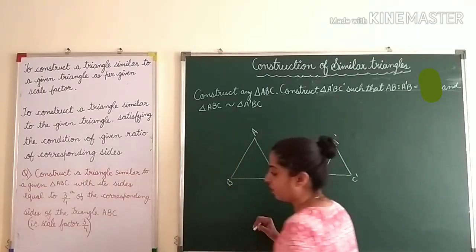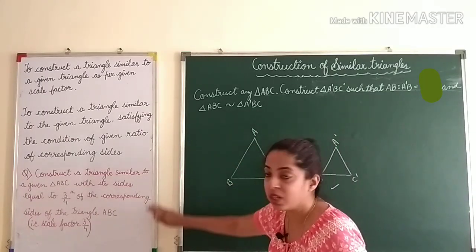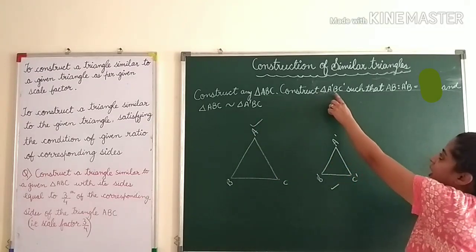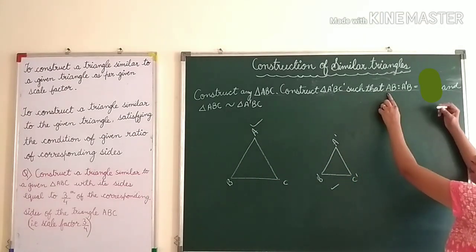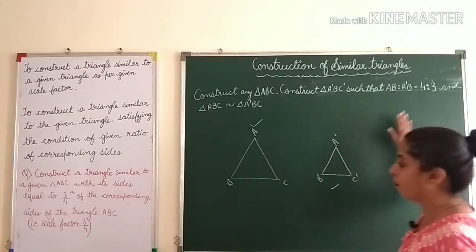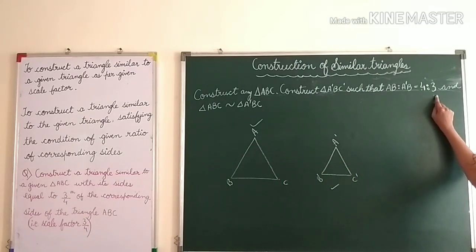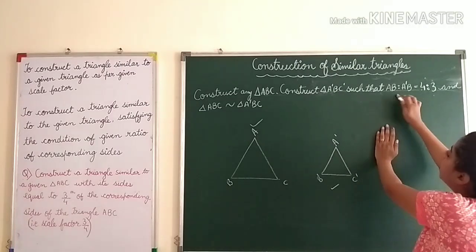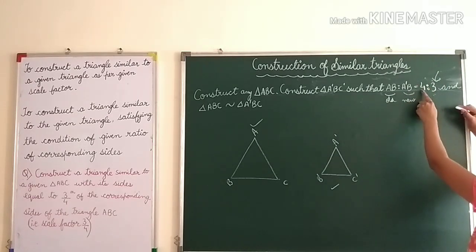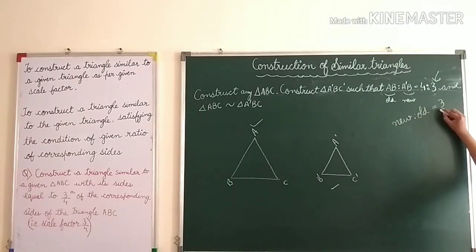Whenever a scale factor is given, compare the new triangle to the old one — new is three-fourths of the previous one. Now the question can be twisted: 'Construct triangle A'BC' such that AB : A'B = 4 : 3.' These two questions are the same, but one shows 3/4 and the other shows 4/3. This is where children make mistakes. Read carefully — this ratio is old to new, so when you write new to old it becomes 3/4.